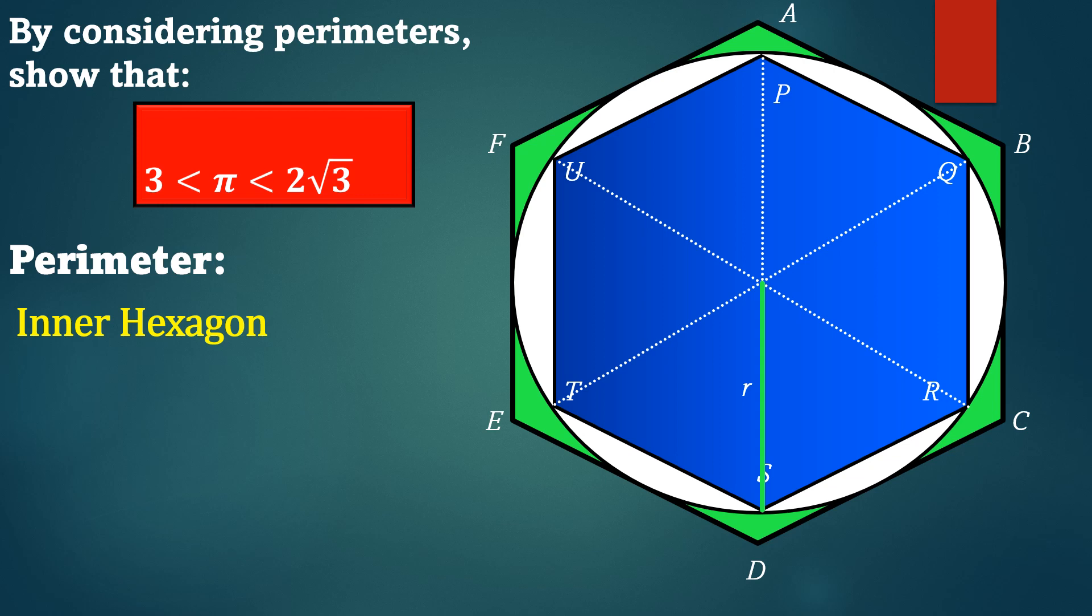Now, if a regular hexagon is inscribed in a circle, then its side is equal to the radius of the circle. Which means all of the sides of the equilateral triangle are all r centimeters.